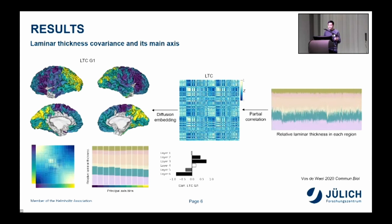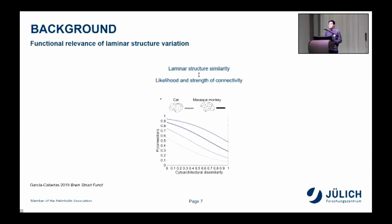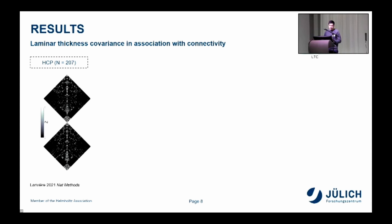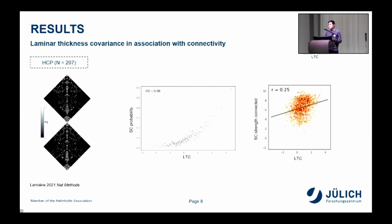After describing this map using the data-driven approach, we were interested in its functional relevance. In many previous studies, mostly in animals, it has been shown that as regions become more similar in laminar structure and cytoarchitecture, they are more likely to connect and their connection is also stronger. We aimed to test this hypothesis in our data. Using the structural connectivity matrix from the ENIGMA toolbox, based on a subsample of the HCP dataset, we observed that as regions become more similar in laminar structure — as their laminar thickness covariance increases — they are more likely to connect, and if connected, the strength of their connectivity is also increased. So we confirm this effect, previously observed in animal studies, also in humans.